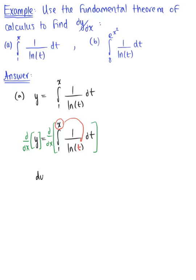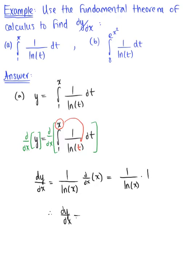So we have dy/dx. The derivative of y with respect to x, by the fundamental theorem, is 1 over the natural log of x, multiplied by the derivative of that upper bound — d/dx of x — which of course just goes to 1. So that's 1 over the natural log of x multiplied by 1, and therefore dy/dx is equal to 1 over the natural log of x. That is our final answer.